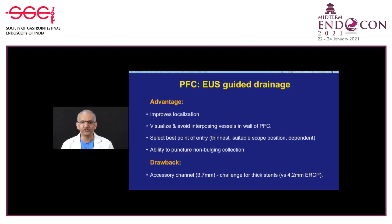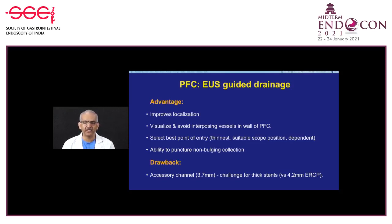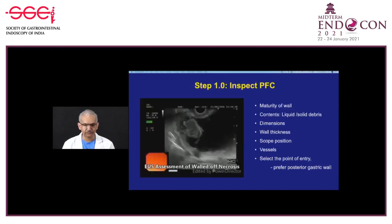EUS also enables drainage of collections which are non-bulging in the stomach, duodenum, or esophagus. The only drawback compared to duodenoscope-guided drainage is that the channel diameter is 0.5 millimeter less: 3.7 mm in EUS versus 4.2 mm in a therapeutic duodenoscope. Passing a 10 French stent therefore has challenges.